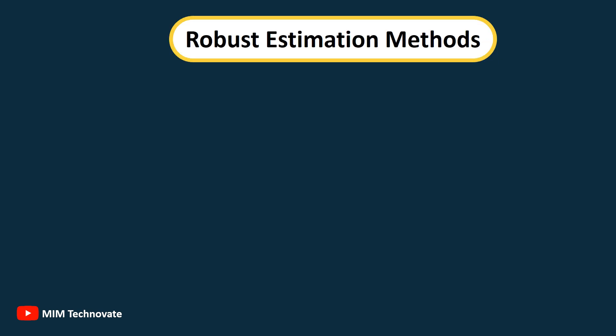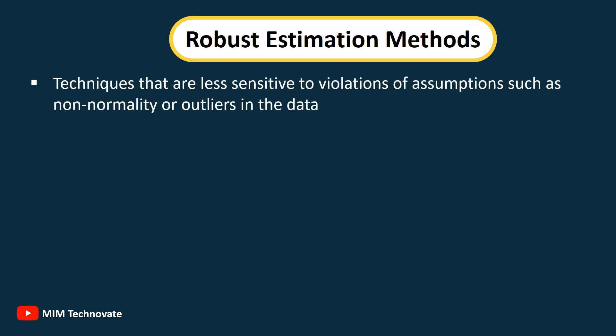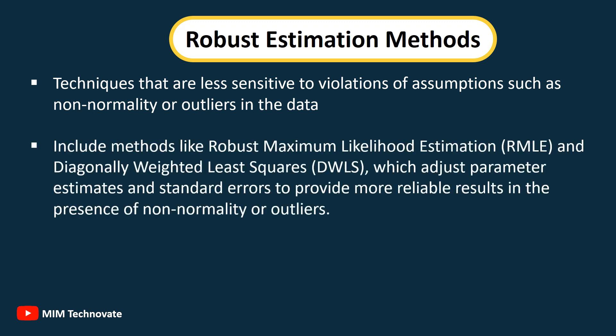Robust Estimation Methods: Techniques that are less sensitive to violations of assumptions such as non-normality or outliers in the data. They include methods like Robust Maximum Likelihood Estimation (RMLE) and Diagonally Weighted Least Squares (DWLS), which adjust parameter estimates and standard errors to provide more reliable results in the presence of non-normality or outliers.